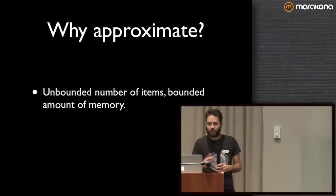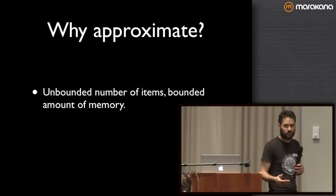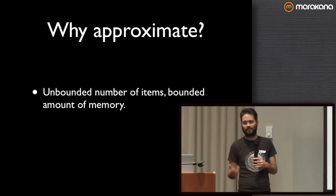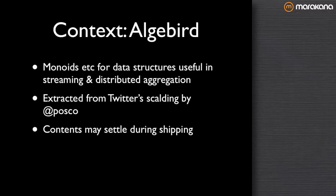Almost everybody in this talk knows bloom filters, which are probably the best-known sort of approximate set. The context of this talk is the Algebra library, which came out of Twitter. If you were in Oscar's talk earlier, you might have seen a bit about it. It's an abstract algebra framework specifically focused on data structures you might use in streaming or distributed computation like Hadoop for aggregation. In practice, a lot of those end up being approximate collections. This came out of the Scalding project, which I started at Twitter, and Oscar extracted and added a bunch of code — most of the credit for the code in this talk should go to Oscar.